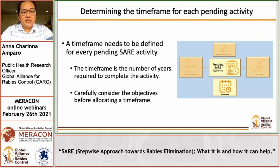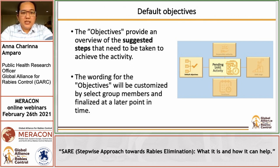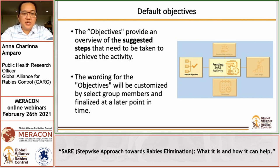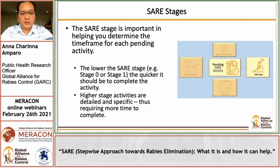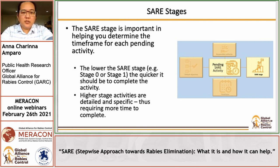The timeframe also needs to be set for each activity — this is the number of years needed to complete the activity. Looking at the objectives will help you decide on the appropriate timeframe. In the tool, we have default objectives that are automatically populated for each activity, providing an overview of the suggested steps that need to be taken. They can be customized depending on the country's needs. The SARA stage is important in helping you determine the timeframe — the lower the SARA stage, the quicker it should be to complete the activity. Higher stage activities are detailed and specific, thus requiring more time to complete.